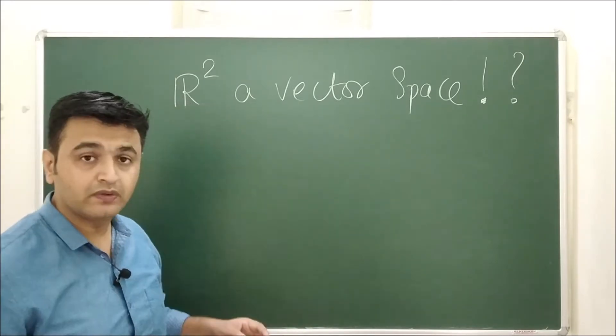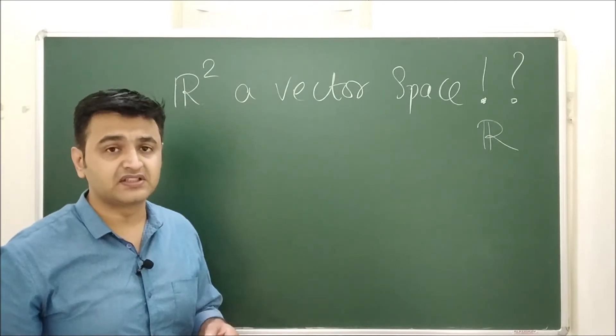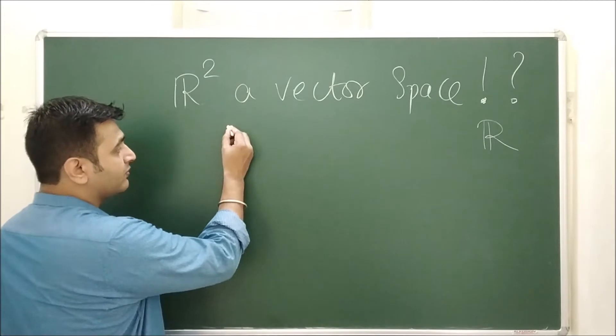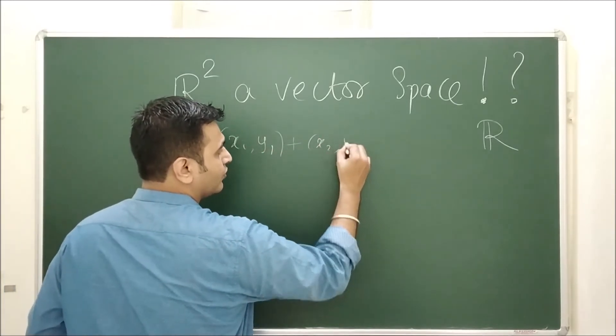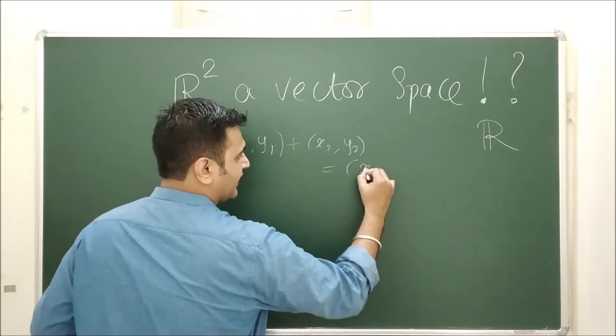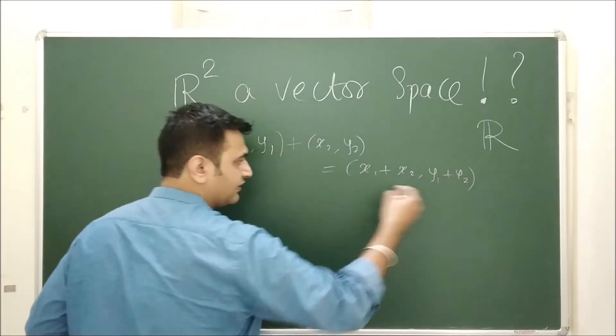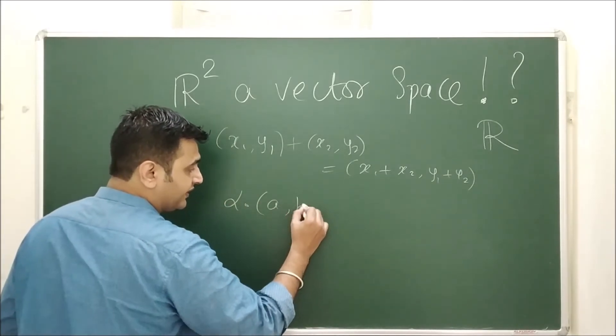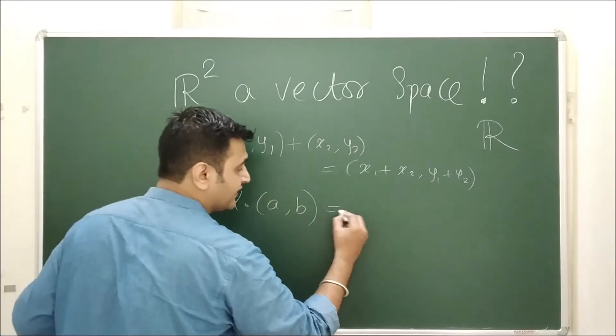Therefore one has to be careful while answering this. So it doesn't form a vector space over C under usual scalar multiplication. But if it says, is R² a vector space over R itself? Then again you should ask, under what operation? Because he might define, like addition you can define the normal way: say (x₁,y₁) + (x₂,y₂), you define this as (x₁+x₂, y₁+y₂). This is my usual addition, vector addition.